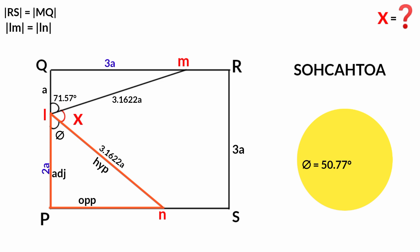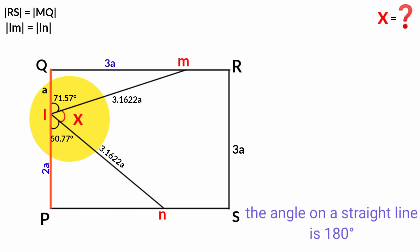So this angle here is 50.77 degrees in size. Now if you look, this angle and this are on the same straight line, and we know that angles on a straight line equal 180 degrees. Based on that, x must equal 180 minus 50.77 minus 71.57 degrees, which is 57.66 degrees.